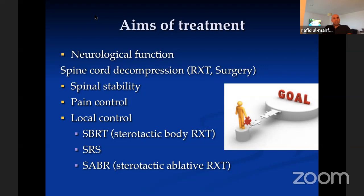I've summarized the treatment aims in four points. The first is neurological function — as neurosurgeons, how to keep that for as long as possible. The second is spinal stability and how to maintain it. Then from an oncological aspect, it's pain control and oncological control, which can include radiotherapy — various terminologies including SRS, SBRT, or SABR — all referring to localized radiotherapy techniques.